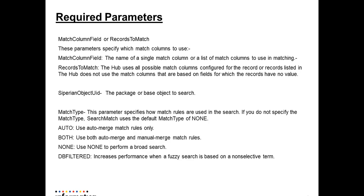Here are the parameters we need to pass with a search match API call: match column field or records to match. These parameters specify which match column to use. If we are using match column field, we can directly pass the match column we have configured on the Hub Console. If we are using records to match, we need to pass the physical column, and internally it will map this column and column values to the match column configured on Hub Console.